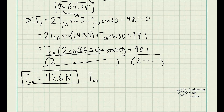The tension in cable CB equals 2 times TCA, which is 2 × 42.6 = 85.2 newtons. Using static equilibrium — the sum of forces in X and Y equal to zero — and free body diagrams, we solved for the angle θ = 64.34°, the tension in cable CA = 42.6 newtons, and the tension in cable CB = 85.2 newtons.